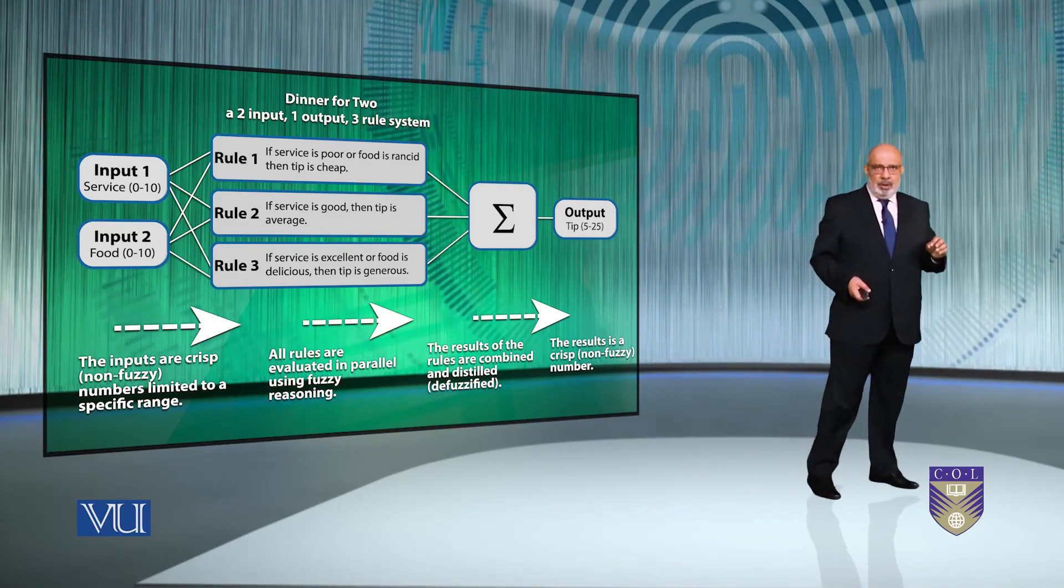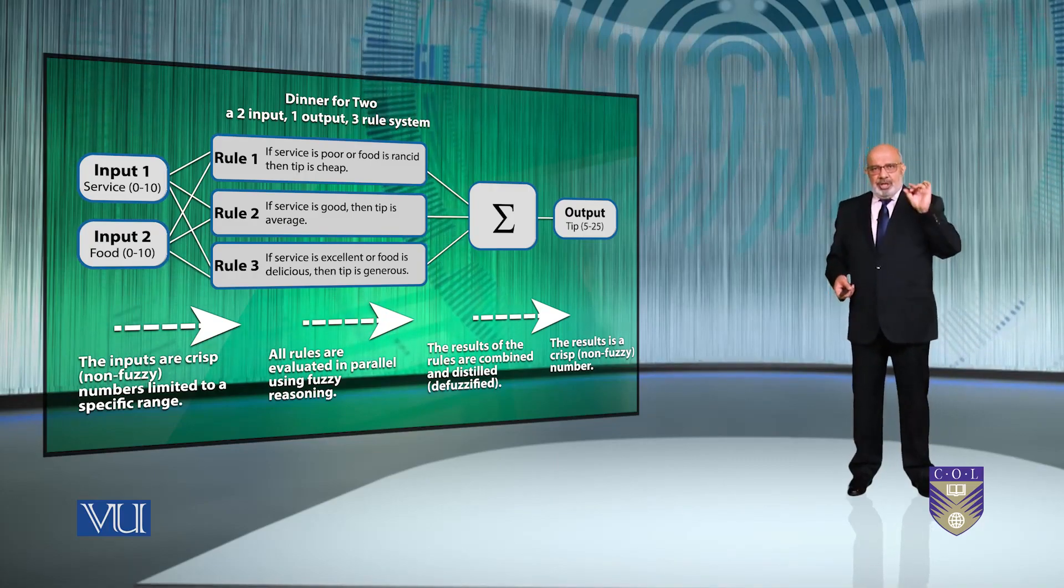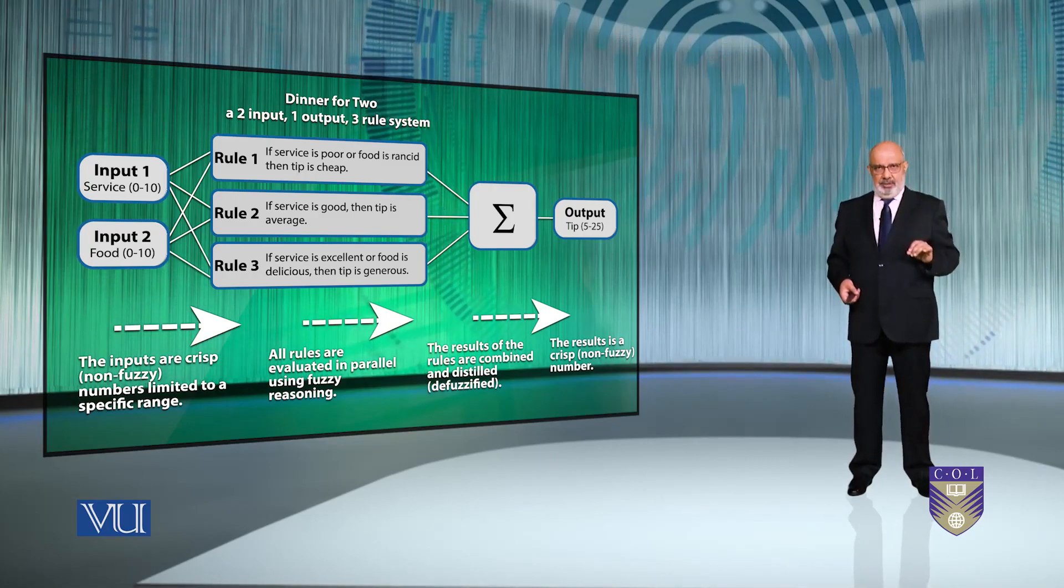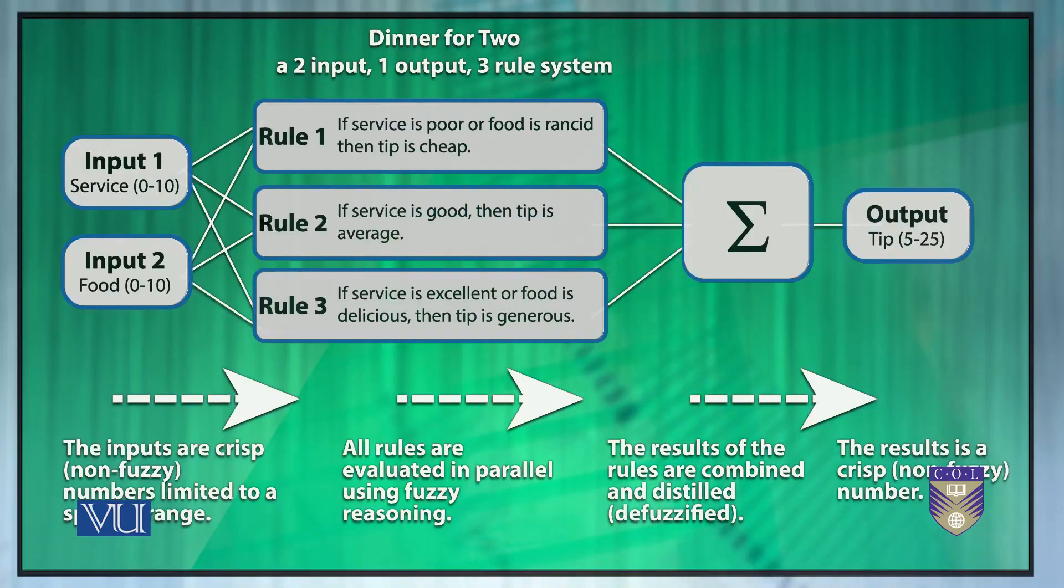So you take the crisp inputs and determine the degree to which they belong to each of the appropriate fuzzy sets via membership function. In this case, the numerical value of the crisp value can range between 0 and 10. The service quality. You can say poor mean 0 and 10 could be excellent.